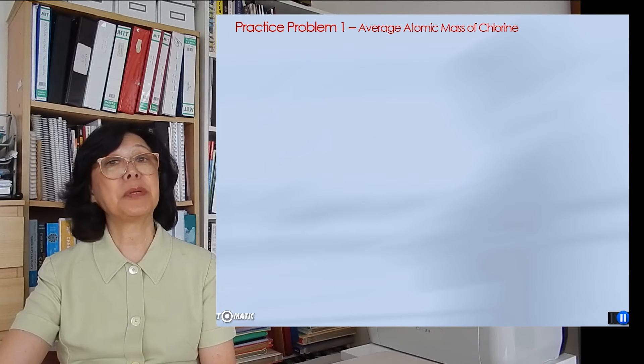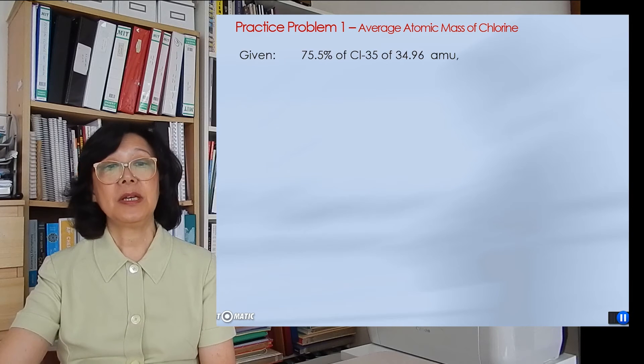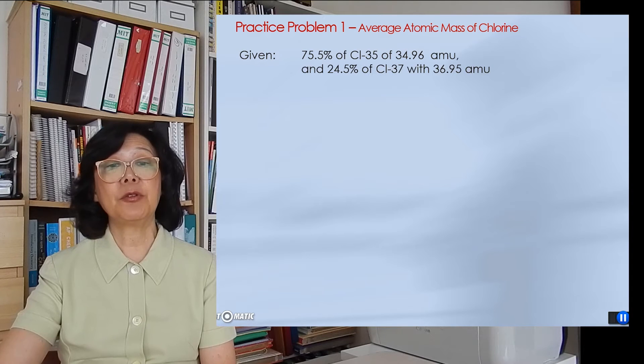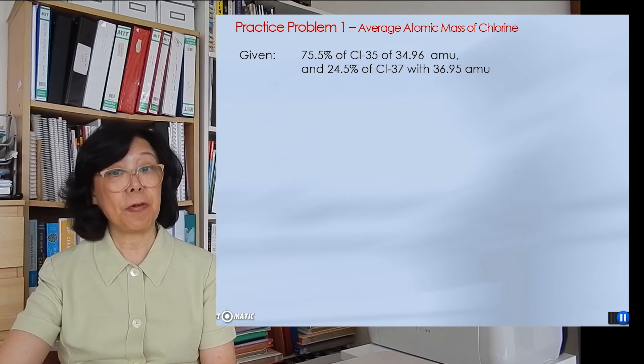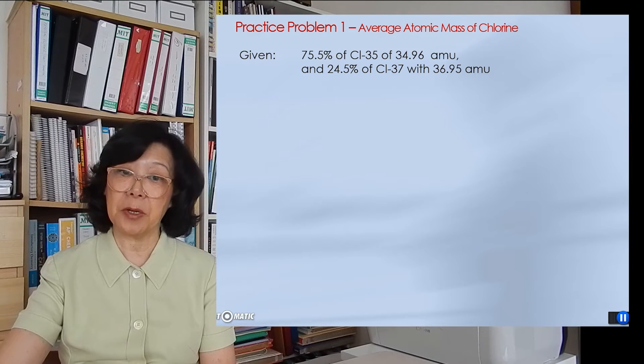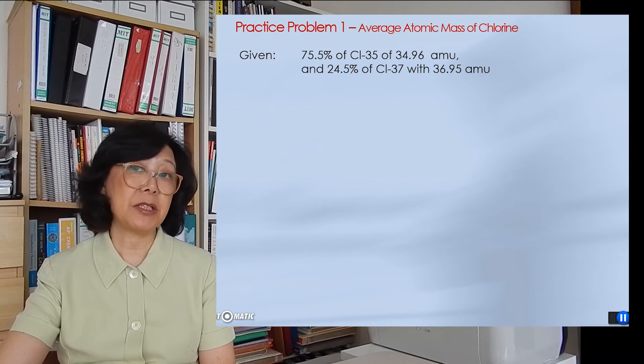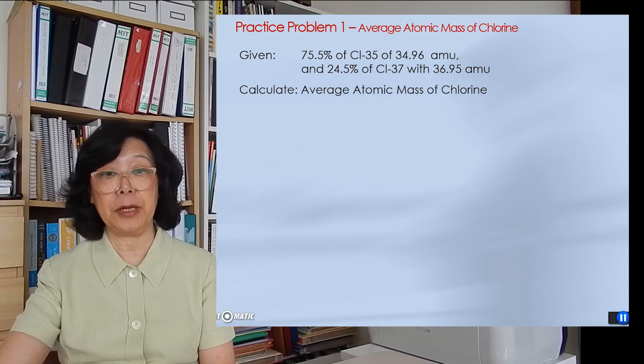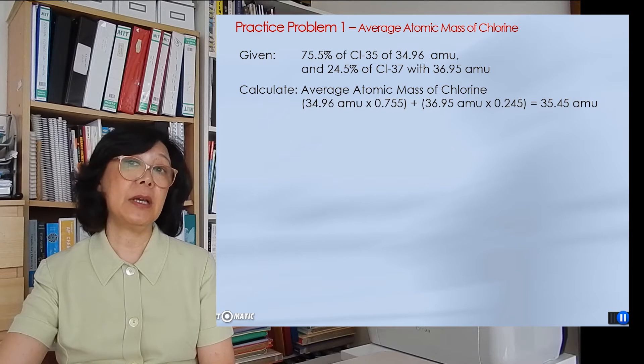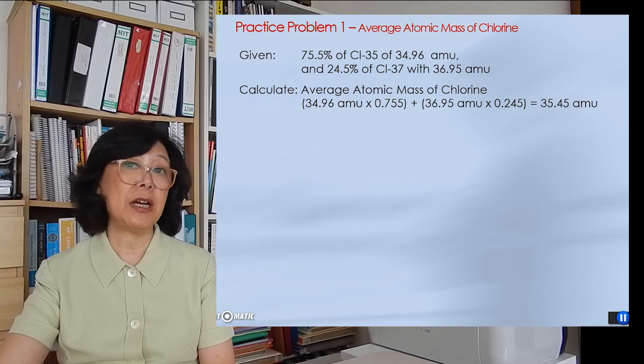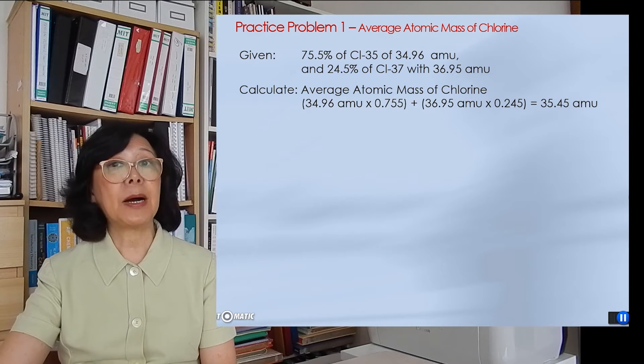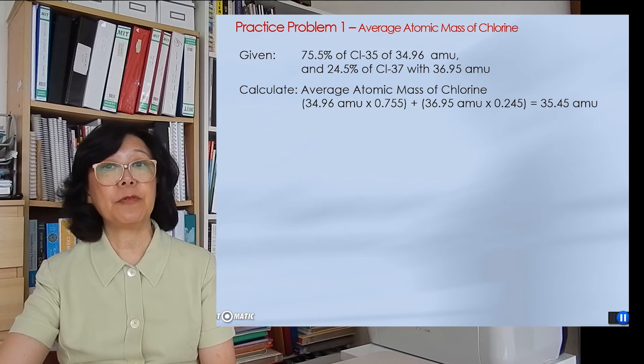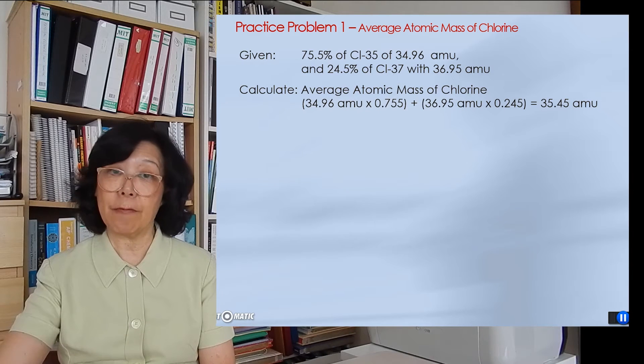Let's try to solve problem number 1. Here we have 75.5% Cl-35 and 24.5% Cl-37, the two naturally occurring isotopes of Cl with different atomic mass units. Let's calculate the average atomic mass of Cl. The way to do it is to take the atomic mass unit of each isotope, multiply by the percent abundance, and add it together. We obtain 35.45 atomic mass units, being the weighted average.